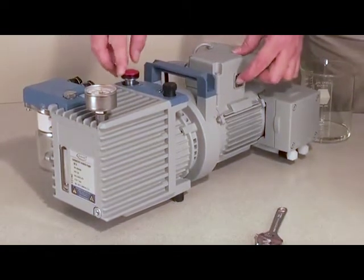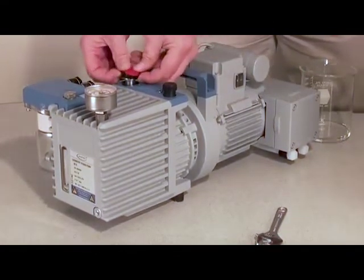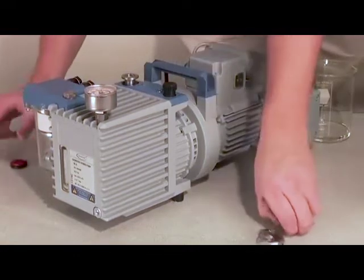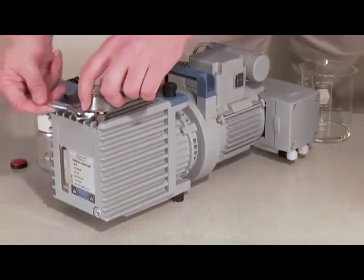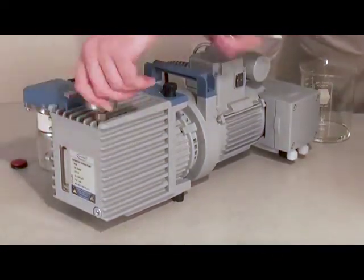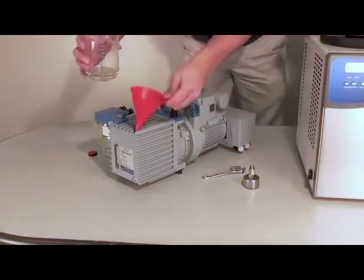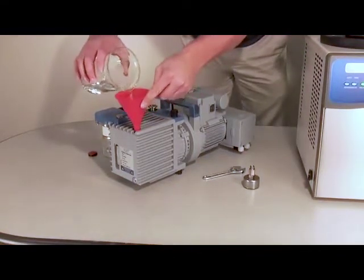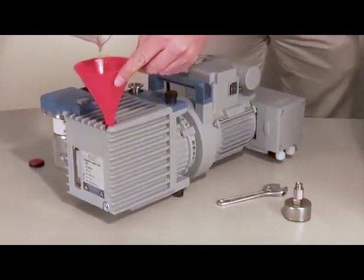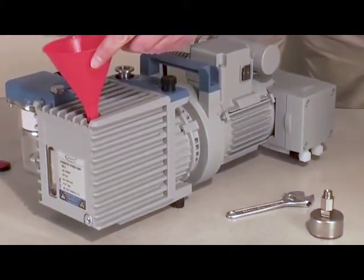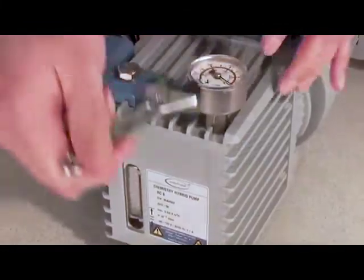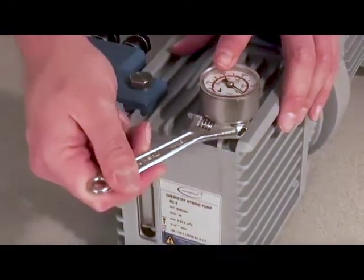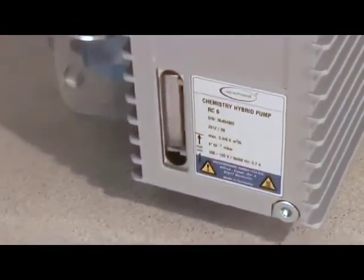After running the pump, turn the pump off and remove the manometer and inlet cap. Add an additional 100 milliliters of oil. Do not overfill the pump. Reinstall the manometer and check the oil level.